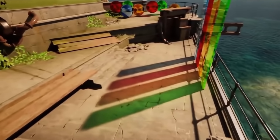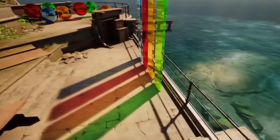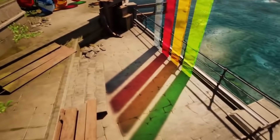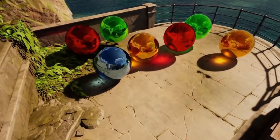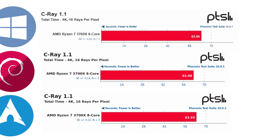Next I ran Cray, a simple ray tracing benchmark testing floating-point CPU performance, measured in seconds — so lower is better. Everything was very close, with all results within a second. All operating systems came in at around 63 seconds, with Windows and Arch closer to the 64-second mark.